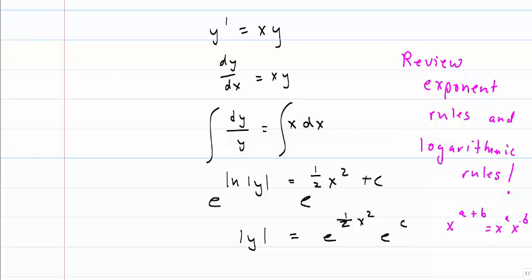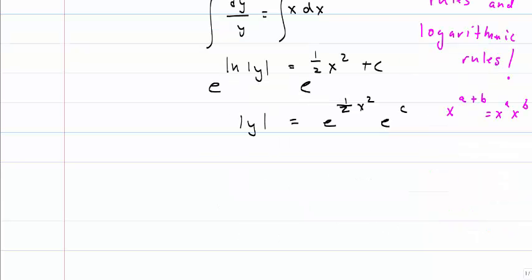Again, go back and review your exponent rules and your logarithmic rules, because we'll be using those a lot. What's interesting about this e^c is that's just another constant. e is a number, an irrational number, but it's still just a number. So a number raised to a constant is just another constant. So I'm going to change that e^c as another c.